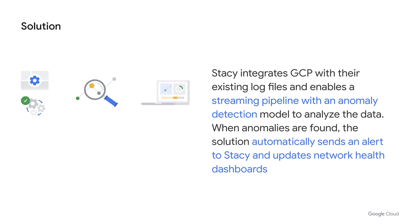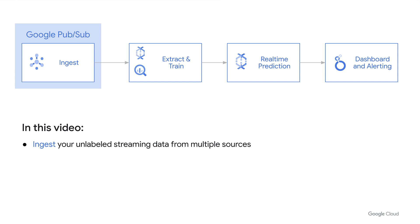Leveraging Google Cloud's streaming service, Stacey can monitor the network, analyze the traffic, and now has the opportunity to review and take action, such as file a ticket in near real-time. When anomalies are found, the solution automatically sends an alert to Stacey and updates network health dashboards. There are four major components to this: ingest, extract and train, predict, and alert.